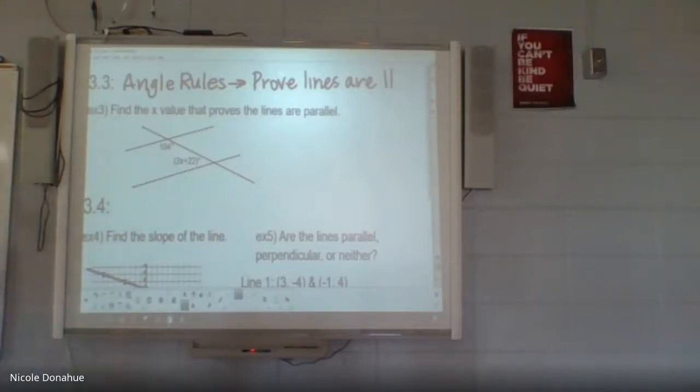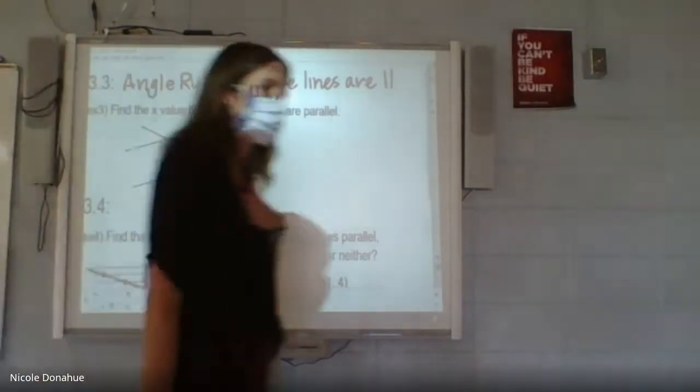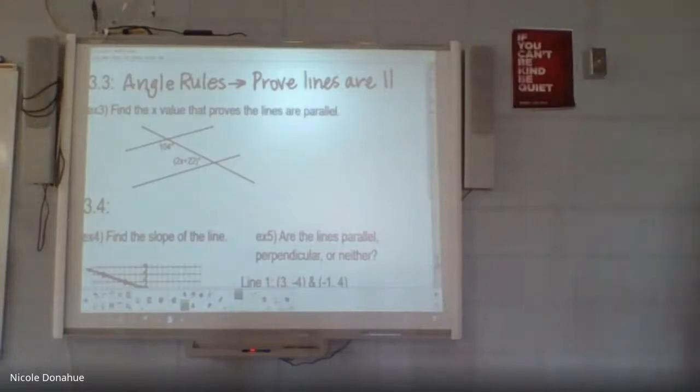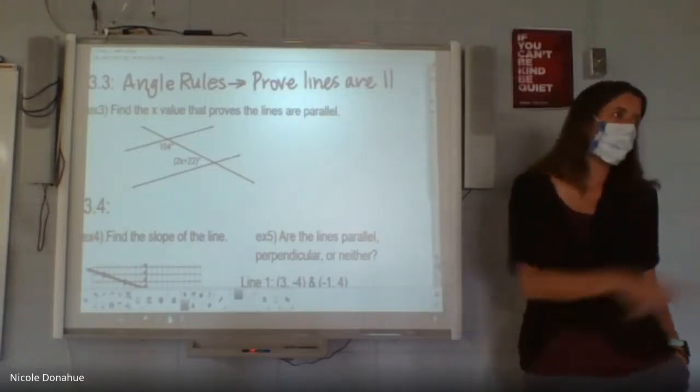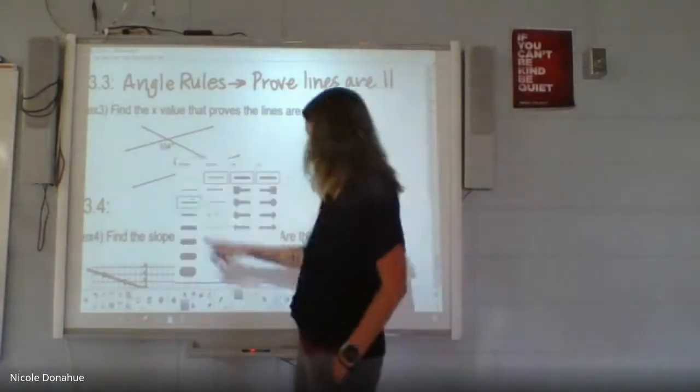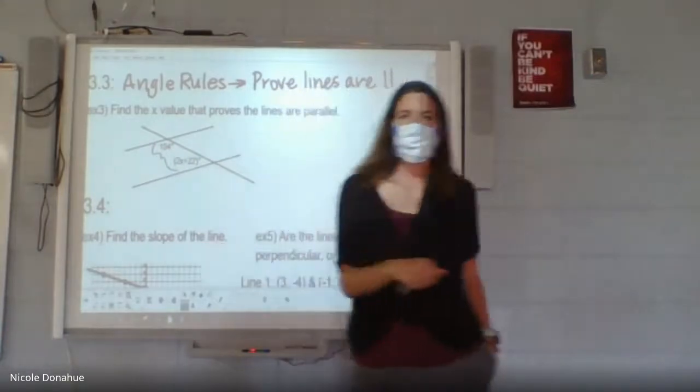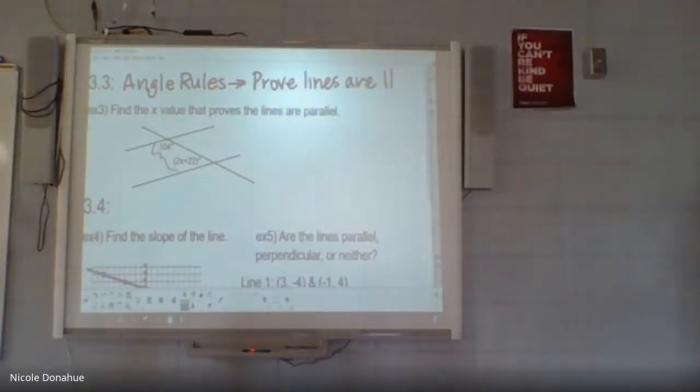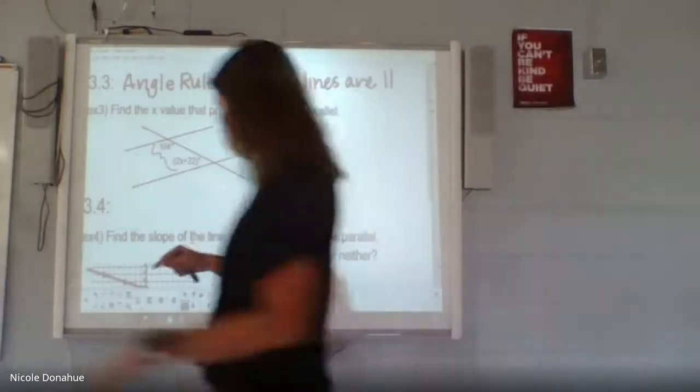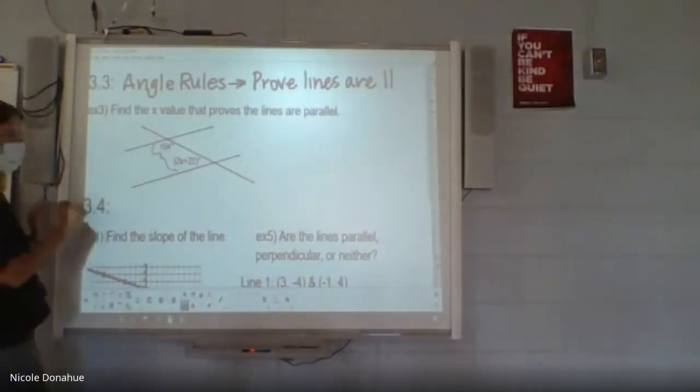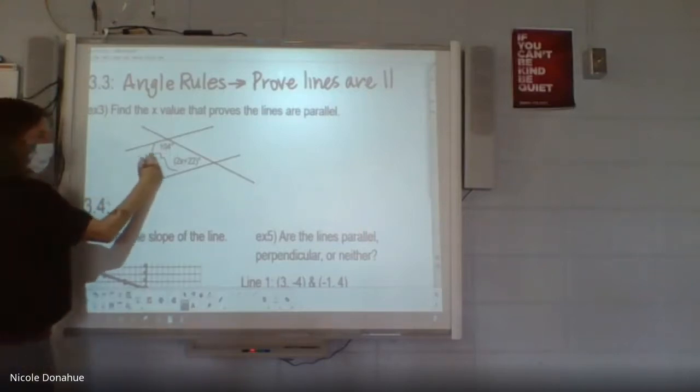How about this one? What do you guys think? There are multiple ways to get to the answer, but there's probably a more straightforward way. What do you think, Luke? Corresponding. That's the other C one. So consecutive interiors. No, that's fine. That's what I thought. So consecutive interior angles, these two should do what? Add to 180. So 104 plus 2x plus 22 should equal 180. And those are called consecutive interior. They're the only ones that add to 180.